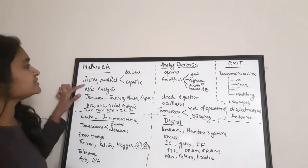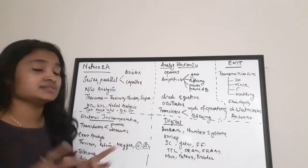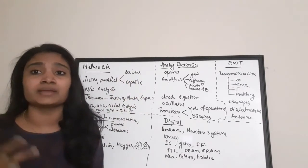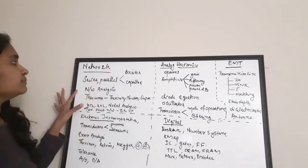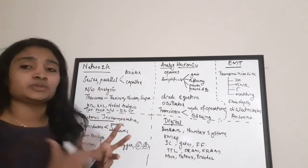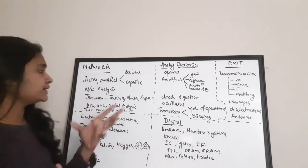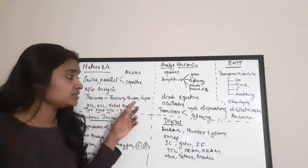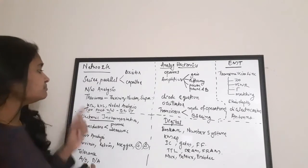In Network Theory, you have to mainly concentrate on series and parallel connections for resistors and capacitors — you will be given some resistor or capacitor combination and you have to find the equivalent value. Also, network analysis where you have to analyze for either current or voltage. The main theorems to concentrate on are Thevenin's theorem, Norton's theorem, and Superposition theorem.